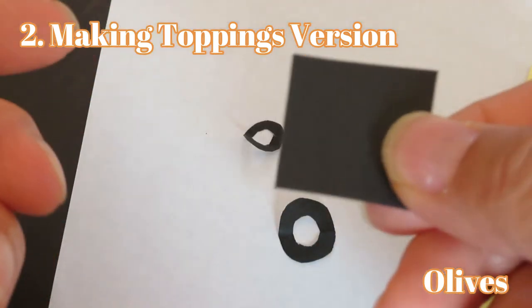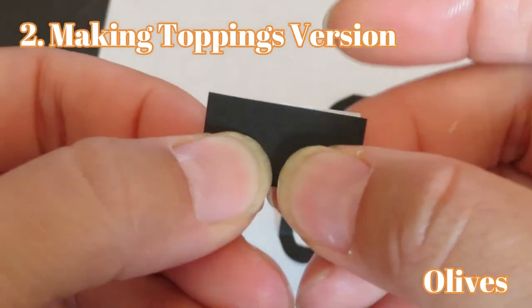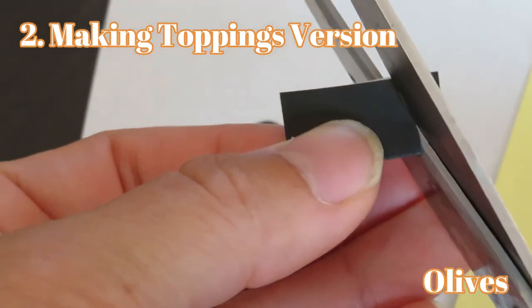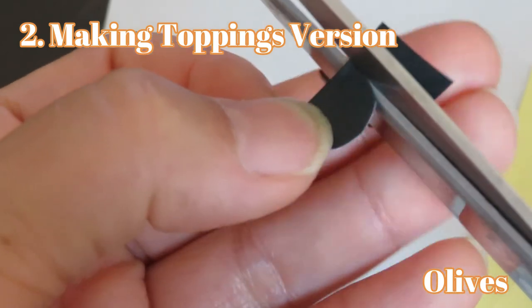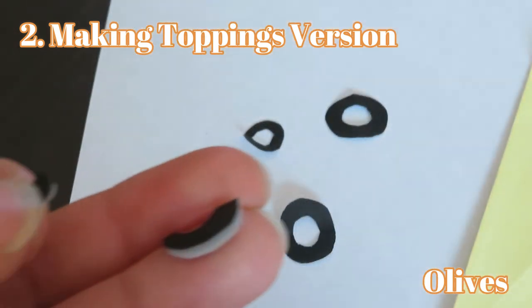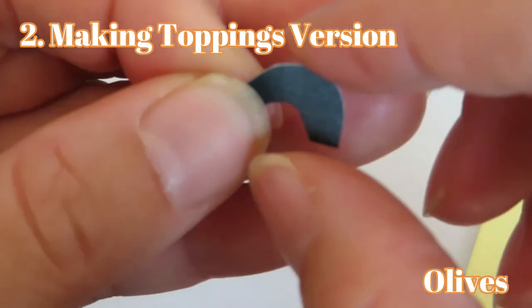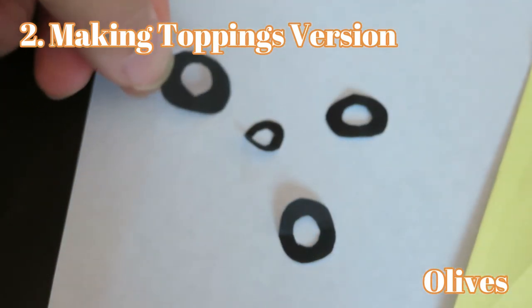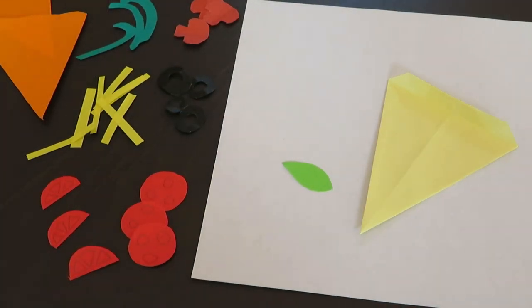Olives are a little tricky. First fold a small square paper into a half, then cut out half circle with scissors. After that cut it into a smaller half circle again. Be careful not to cut your fingers. And after that it looks like olives. Now you're ready to play a pizza shop.